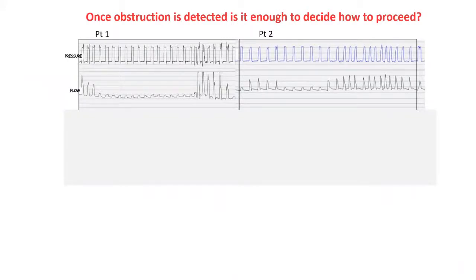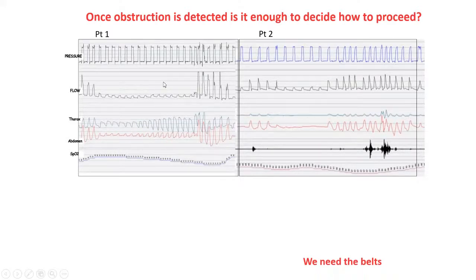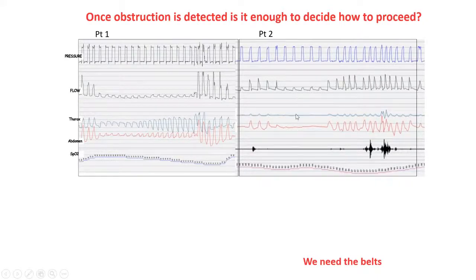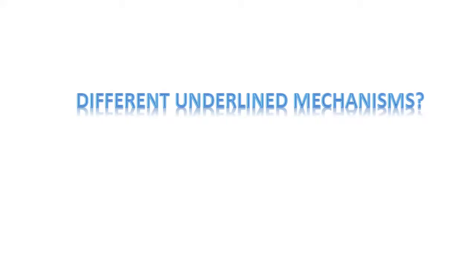Once obstruction is detected, is it always enough to decide how to proceed? Not always. As you can see, patient one and patient two have the same picture of flow decrease. But if we put on belts, in the first case the patient has a lot of movement during this flow reduction — with thoracoabdominal paradox — while in patient two there is a decrease of flow but no belt movement. This means different underlying mechanisms are responsible.